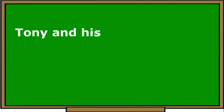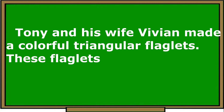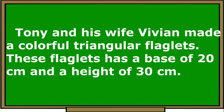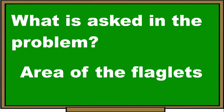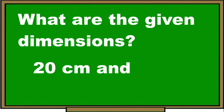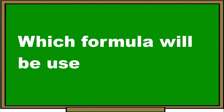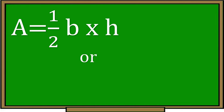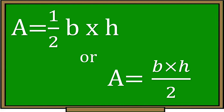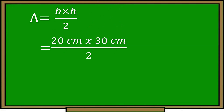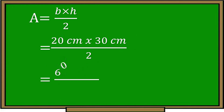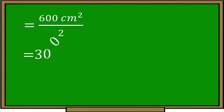Tony and his wife Vivian made colorful triangular flaglets. These flaglets have a base of 20 centimeters and a height of 30 centimeters. What is the area of the flaglets? What is asked? The area of the flaglets. The given dimensions are 20 centimeters and 30 centimeters. The formula used is: area equals one-half base times height, or area equals base times height divided by 2. Substituting: 20 centimeters times 30 centimeters divided by 2 equals 600 centimeters divided by 2. The area of the flaglets is 300 square centimeters.